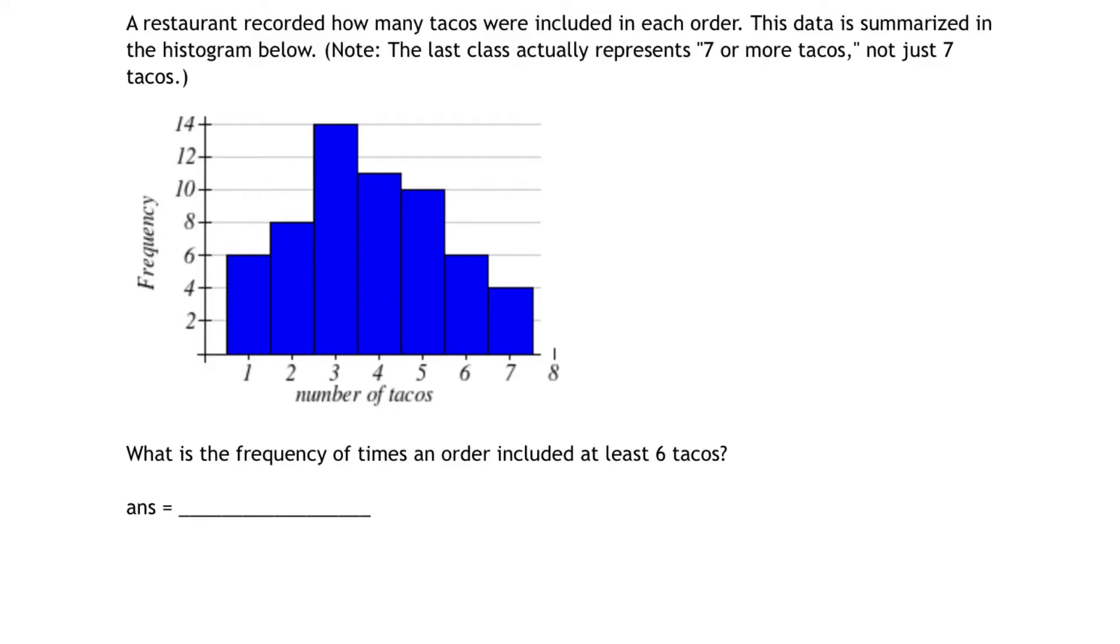A restaurant recorded how many tacos were included in each order. This data is summarized in the histogram below. Note that the last class actually represents seven or more tacos.